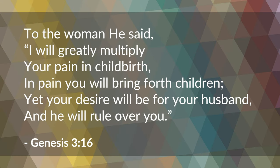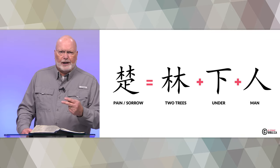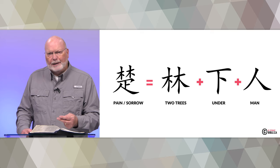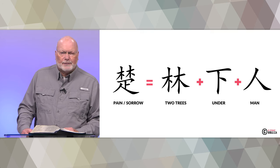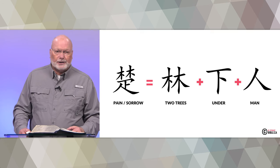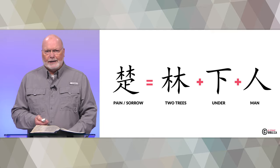Continuing in Genesis chapter 3 verse 16, God pronounces punishment for eating the fruit: 'I will greatly multiply your pain in childbirth. In pain you will bring forth children. Yet your desire will be for your husband, and he will rule over you.' The Chinese character for 'pain and sorrow' is the combination of two trees plus the symbol for 'under' and then 'man.' Eve ate from one of those trees and gave to her husband, and part of her punishment is that she will be under her man — subservient to him. We see this perfectly represented in this Chinese character.